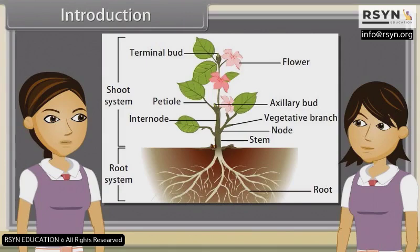Logos means form and Logos means study. Morphology deals with the study of forms and external features of plant parts. When we observe a plant, we see that every plant has roots, stem and leaves. Plants also have flowers and fruits.